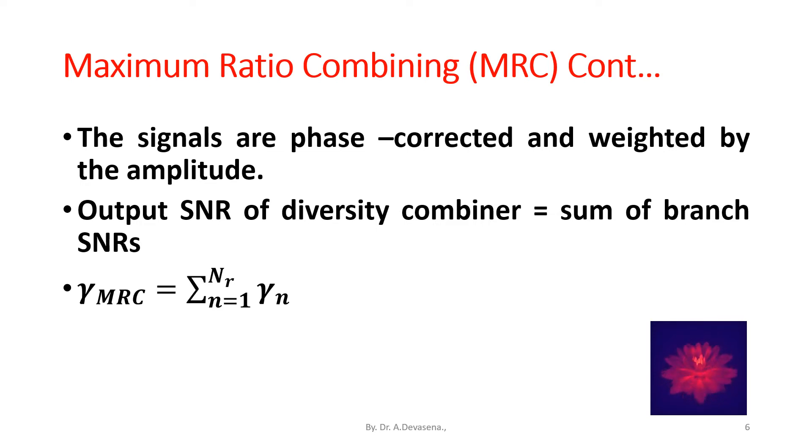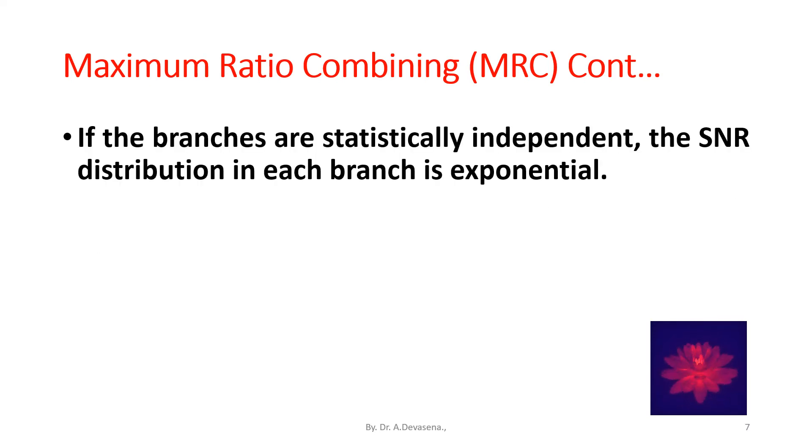If the branches are statistically independent, the SNR distribution in each branch is exponential. Power density function of gamma is equal to 1 divided by N_R minus 1 factorial into gamma power N_R minus 1 divided by gamma bar N_R into N_R into e power open bracket minus gamma divided by gamma bar.